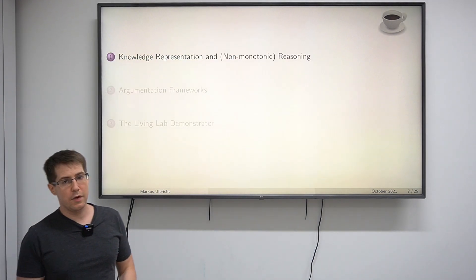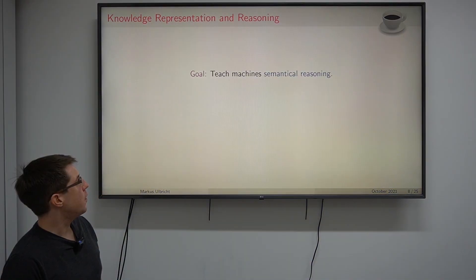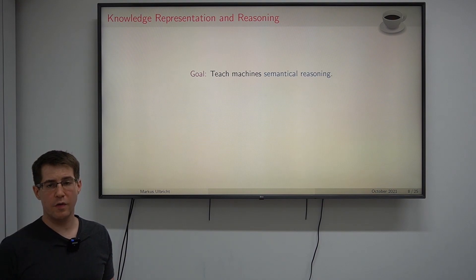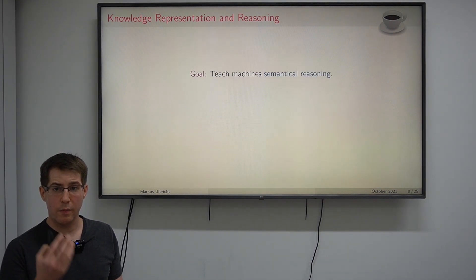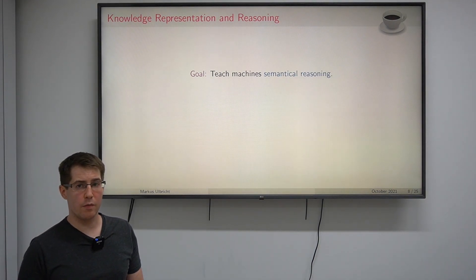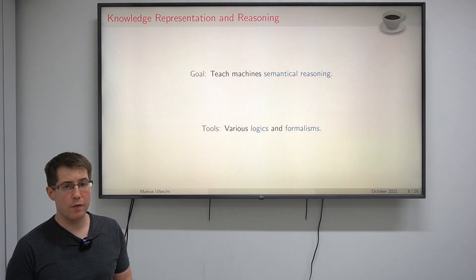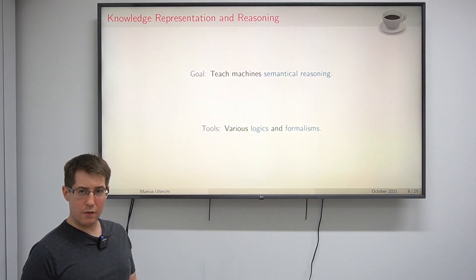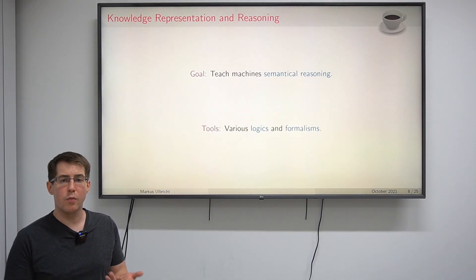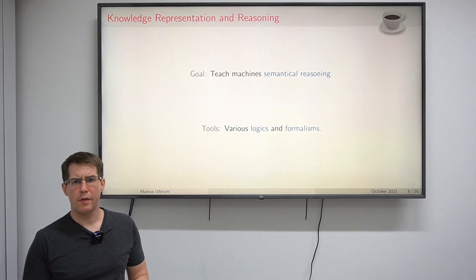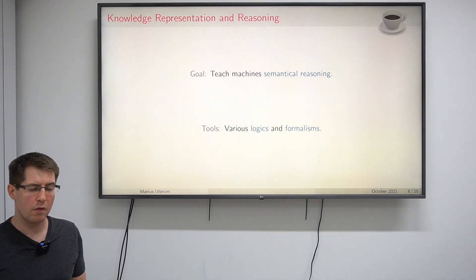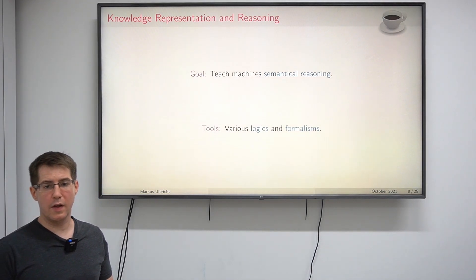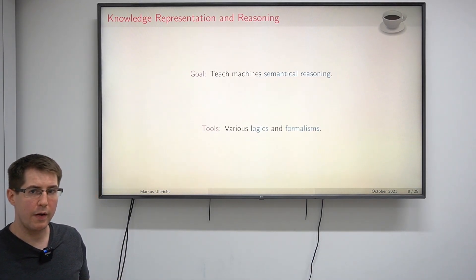Knowledge representation and reasoning aims at teaching machines semantics or common sense reasoning, and the tools we use are various logics and formalisms. We need a way to express our knowledge in a way that machines can understand. You might say this is easy — we have tools like programming languages, right?